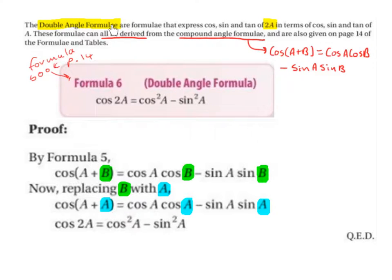The double angle formulae are formulae that express cos, sine and tan of 2A in terms of cos, sine and tan of A.